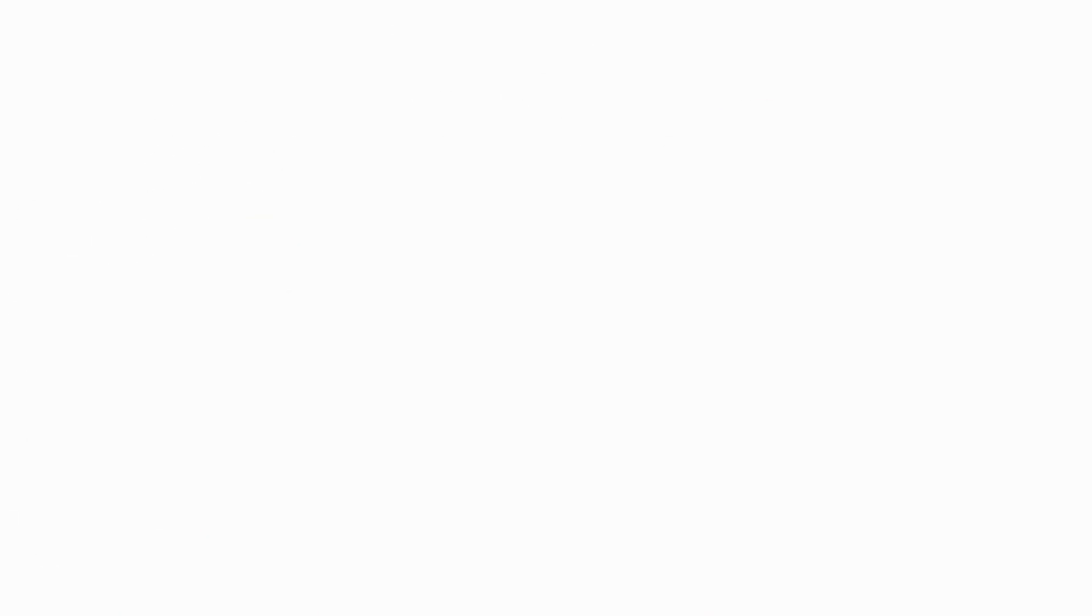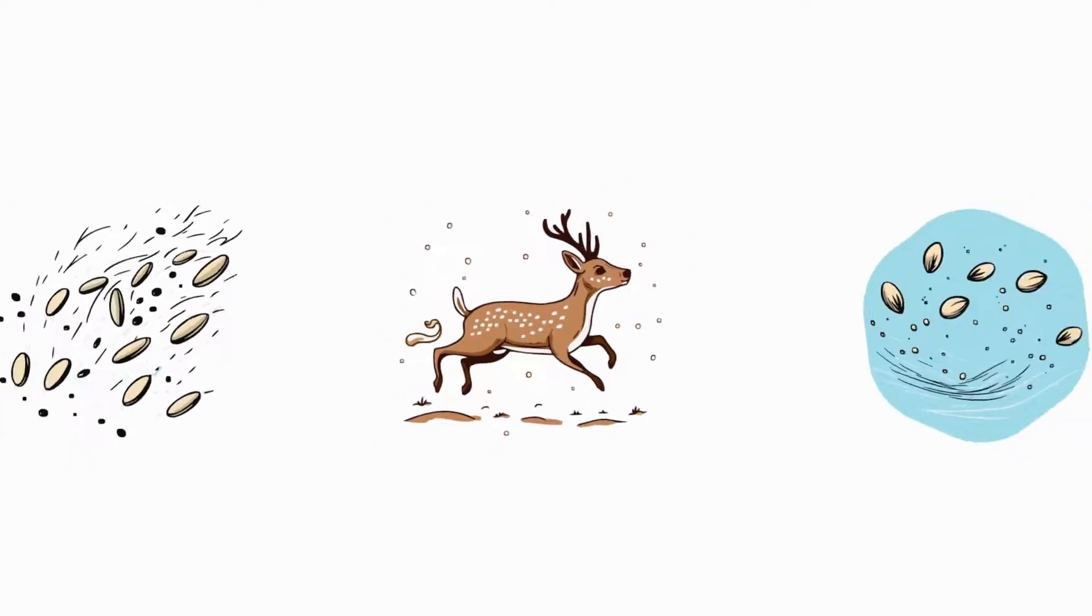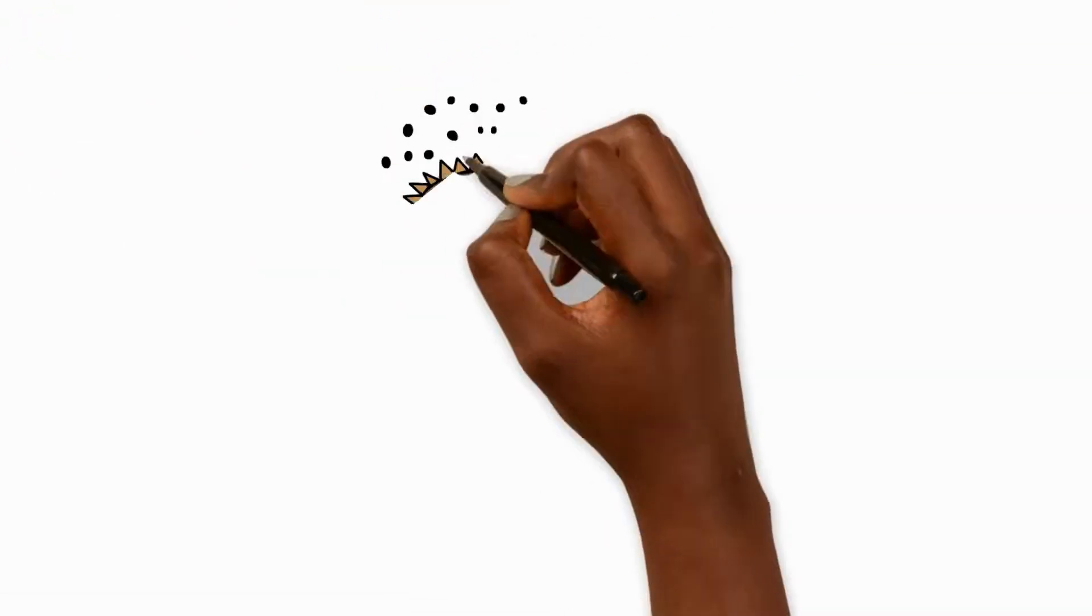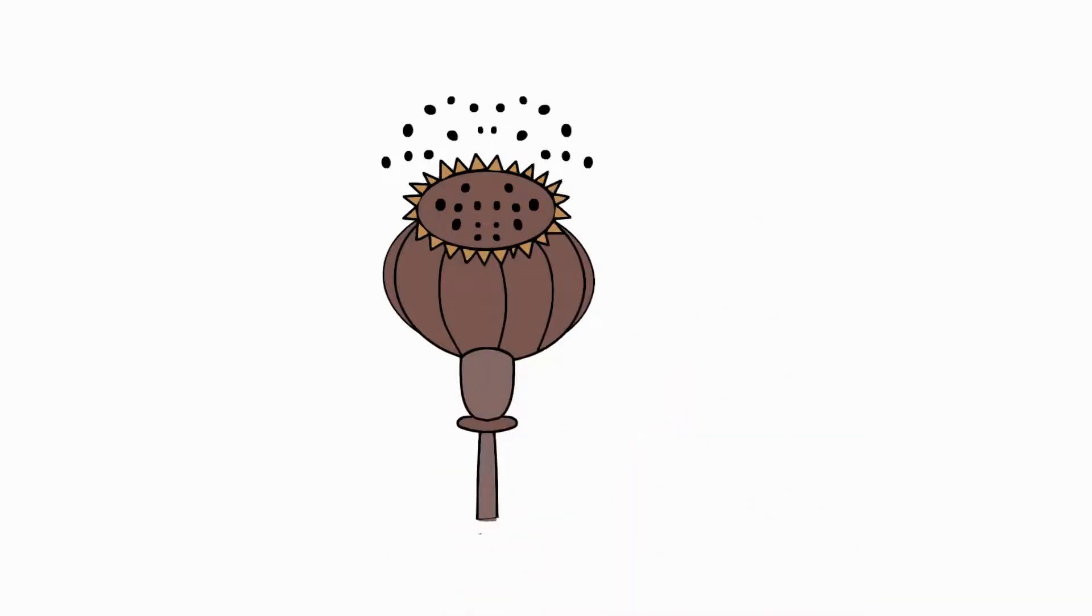Seeds travel in many ways. By wind, water or even animals. We call this dispersal. Some seeds even pop out of their parent plant in a dramatic explosion-like way.